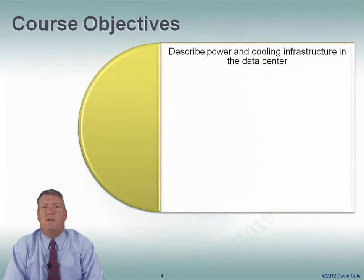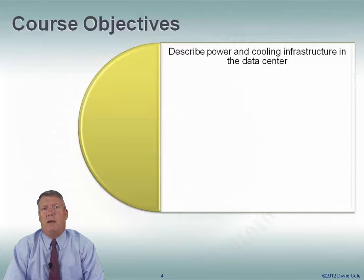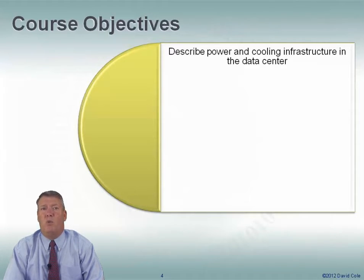Let's look at the course objectives. First we're going to start with describing power and cooling infrastructure in the data center. So we're going to look at all the pieces of power and cooling. Power from the power coming in through the UPS, through the PDUs, all the way down to the rack level. We're going to look at dual corded devices and that impact in the data center and the cooling infrastructure. We're going to look at the different types of cooling devices that are out there. We're going to look at the different cooling strategies, particularly talking about air movement in the data center, because that's very important to get the air to the right place.